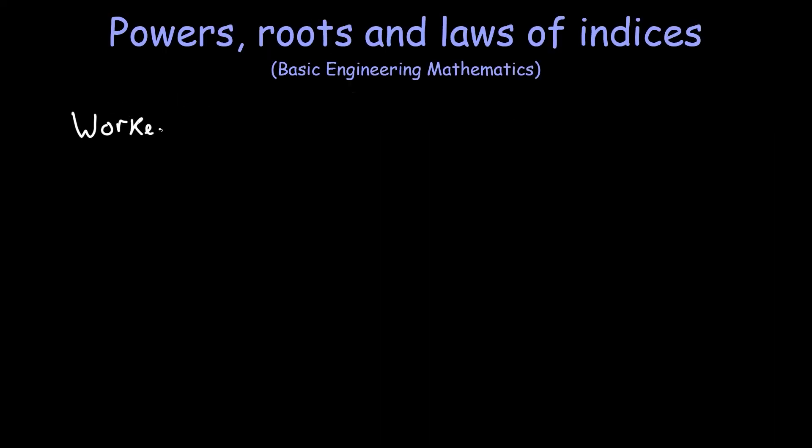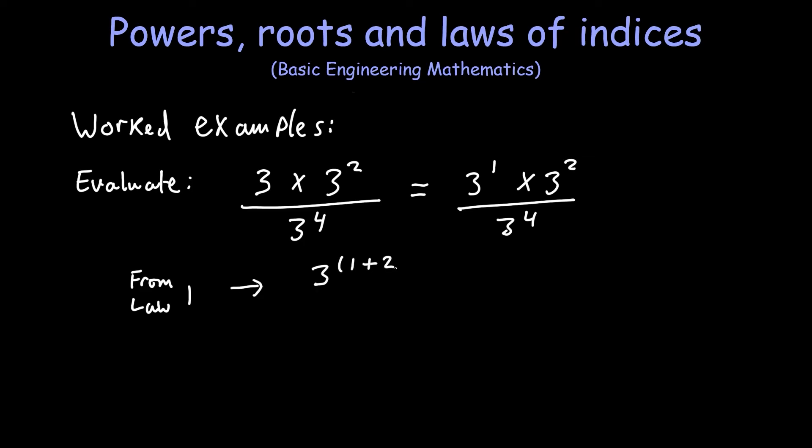So now I'm going to go over a couple of worked examples using a combination of the 6 laws. Okay, so let's evaluate 3 times 3 squared divided by 3 to the power of 4. Also notice here that the bases are all the same. First apply law 1 to the numerator, leaving the denominator alone. And then with the resulting fraction we can apply law 2. This becomes 3 to the power of minus 1, or after using law 5, 1 third.